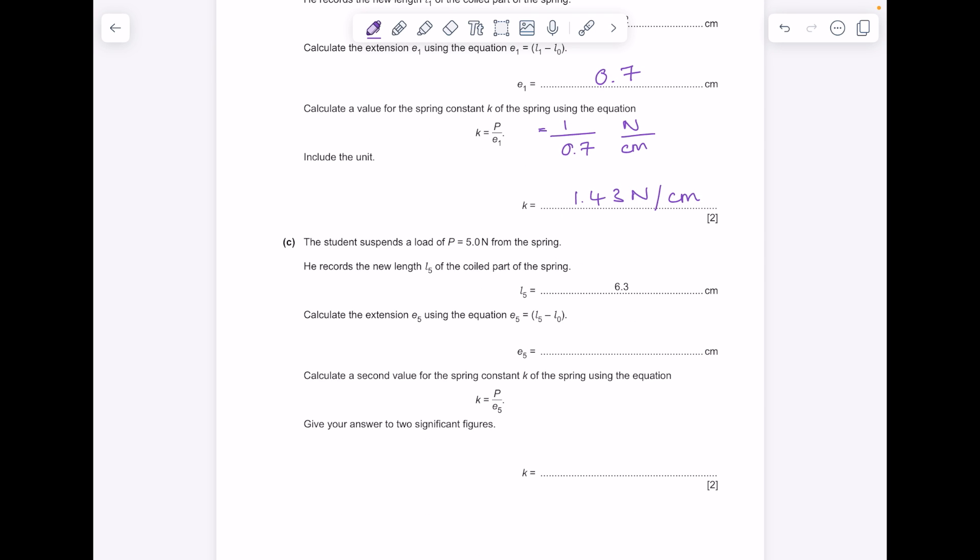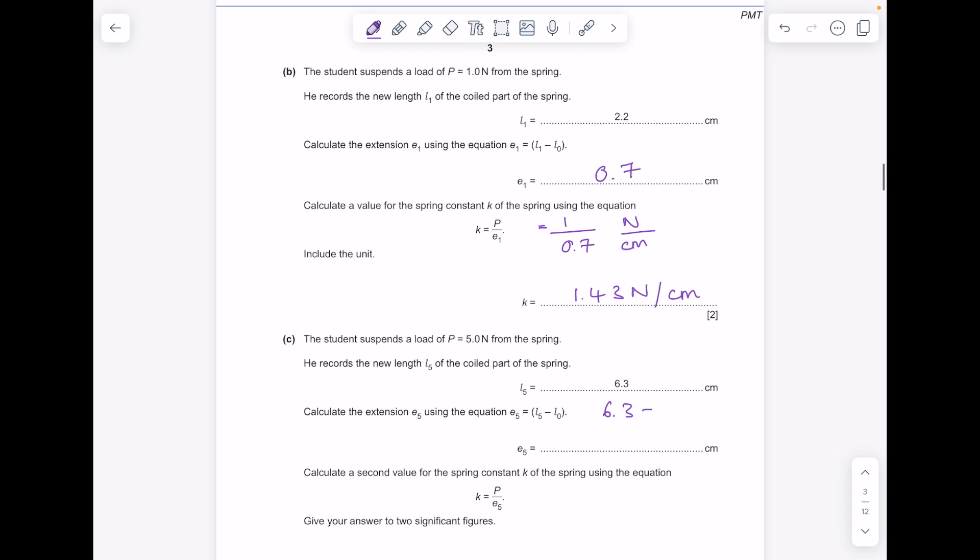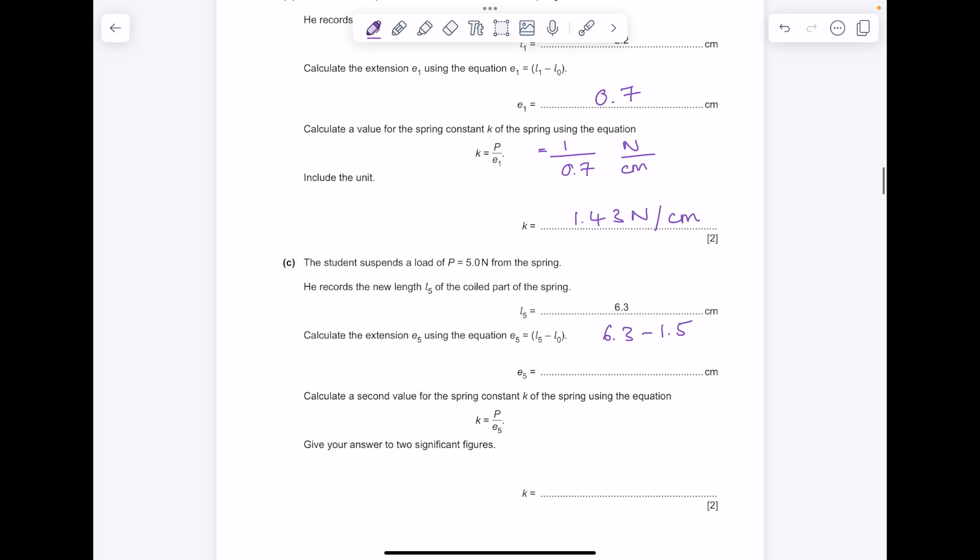The student suspends a load of P equals 5 newtons from the spring. He records the new length L5 of the coiled part of the spring. Calculate the extension E5 using this equation. So it's L5 minus L0 which is 1.5, so that answer is 4.8.